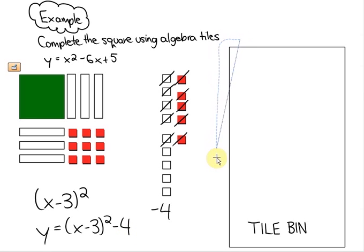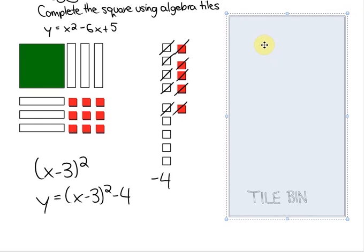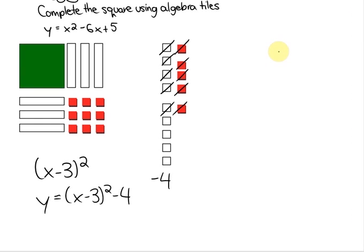Now as far as algebraically speaking, this process looks identical just without pictures. So let me show you what we just did without algebra tiles. If I was asked to complete the square on y equals x squared minus 6x plus 5. What I did was take the x squareds and the negative 6x variables and I needed to complete the square. So what I did was I added and subtracted 9 from the expression. That doesn't change the value.